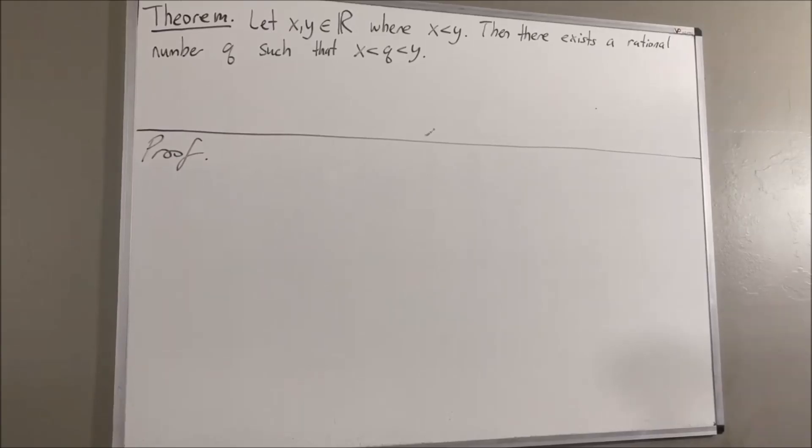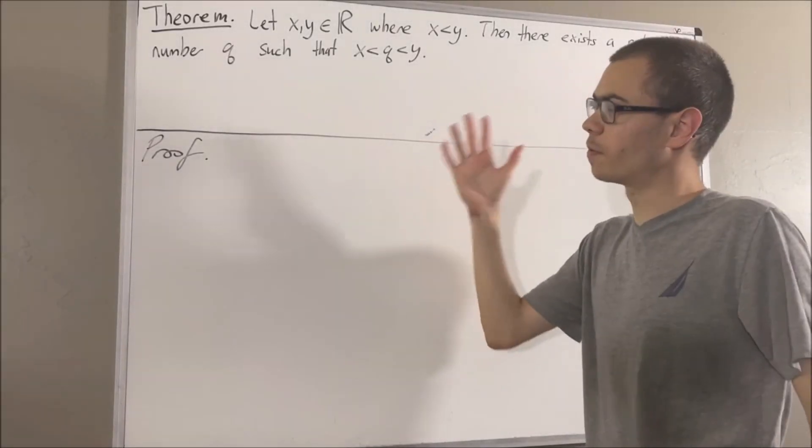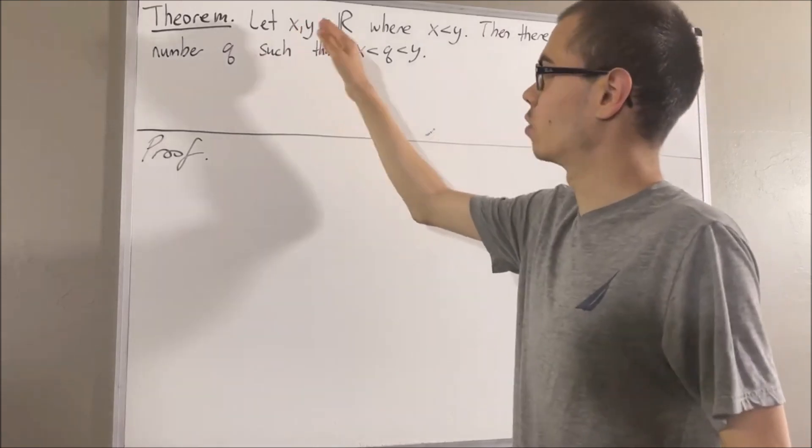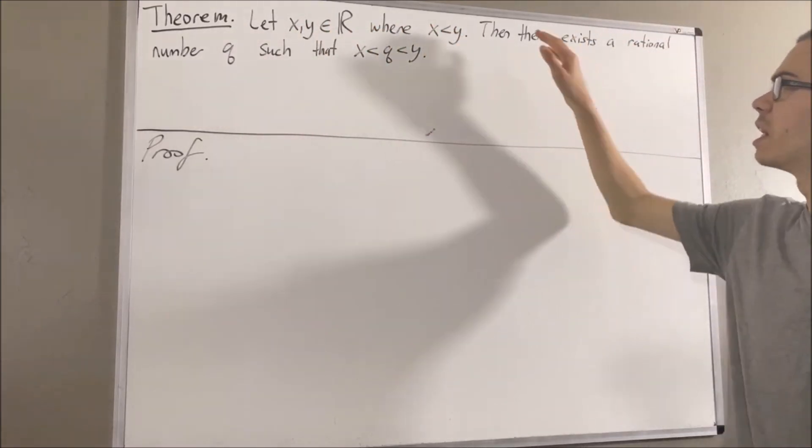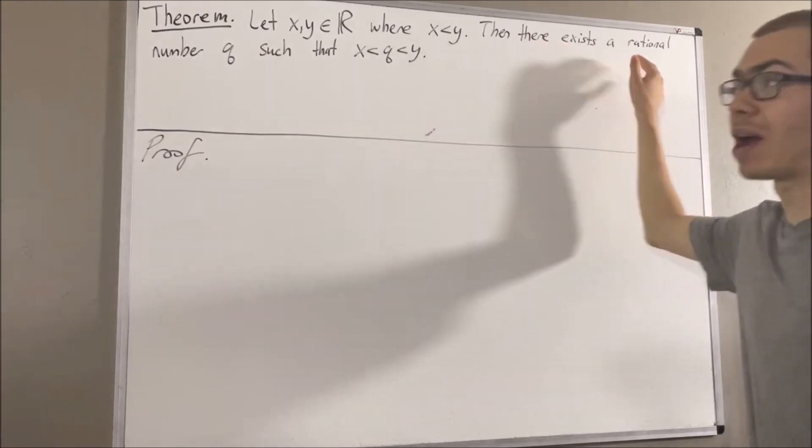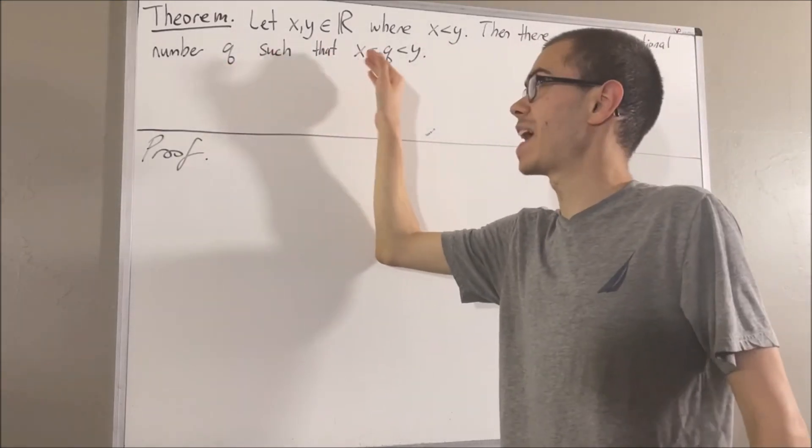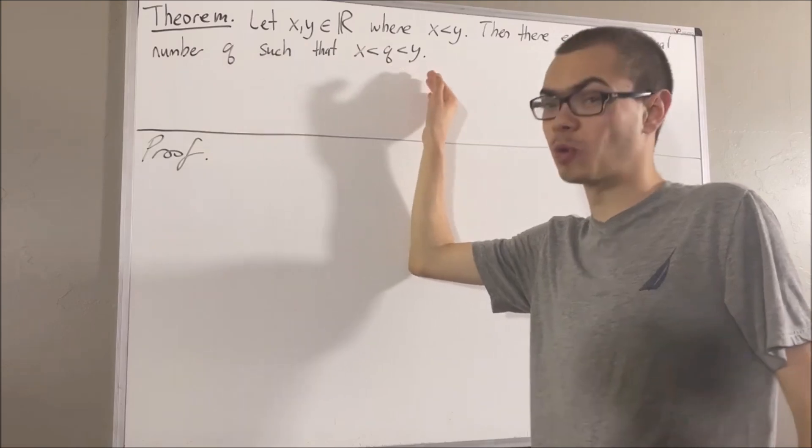Hello! In this video, we are going to prove the following theorem. Let x and y be real numbers where x is less than y. Then there exists a rational number q such that x is less than q is less than y.